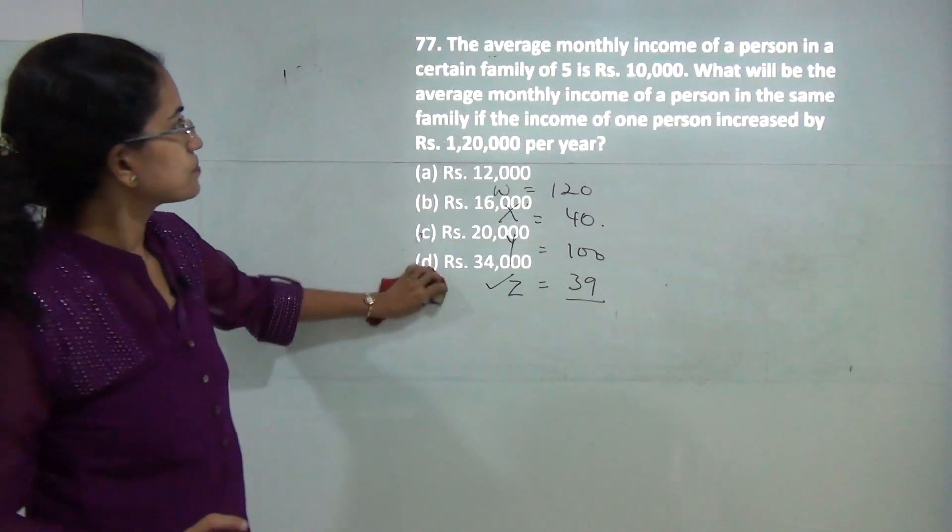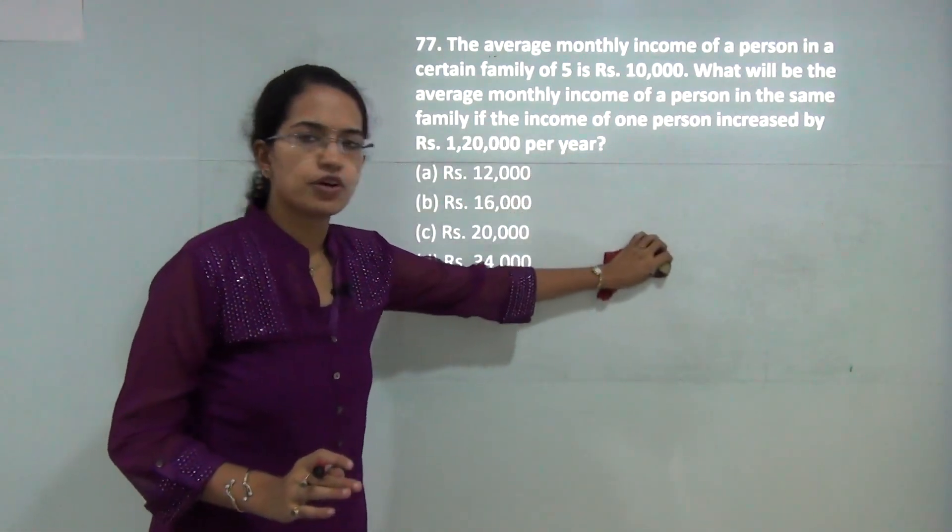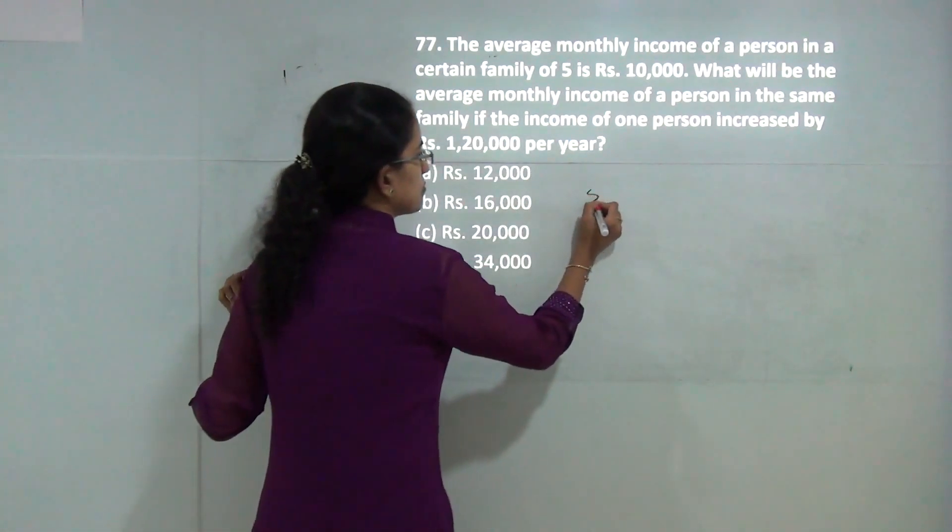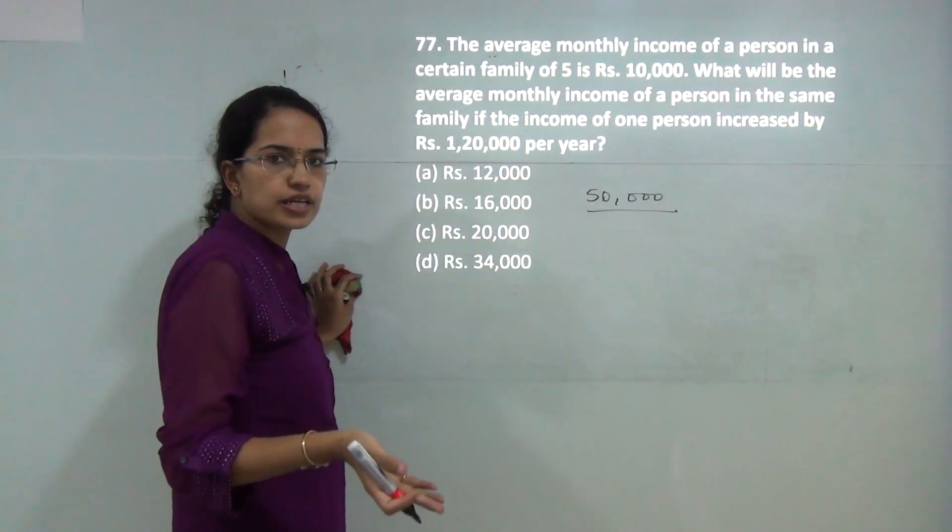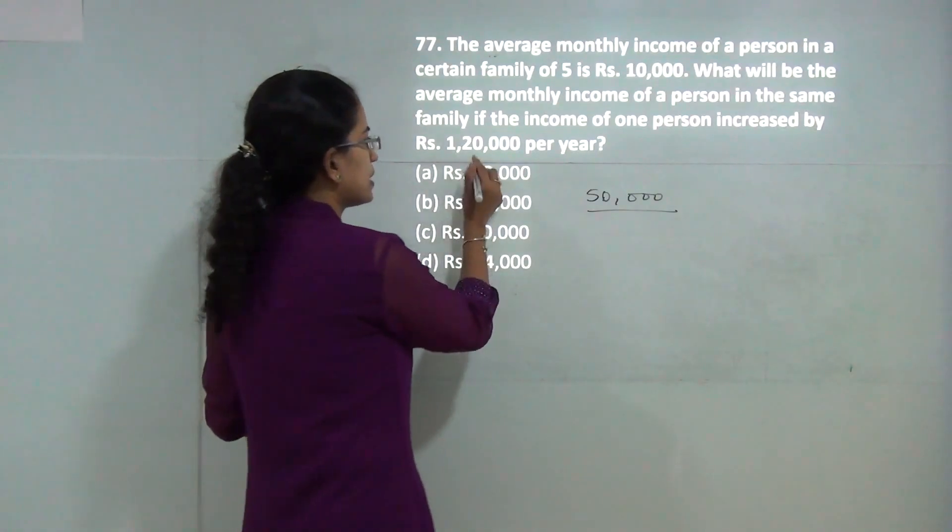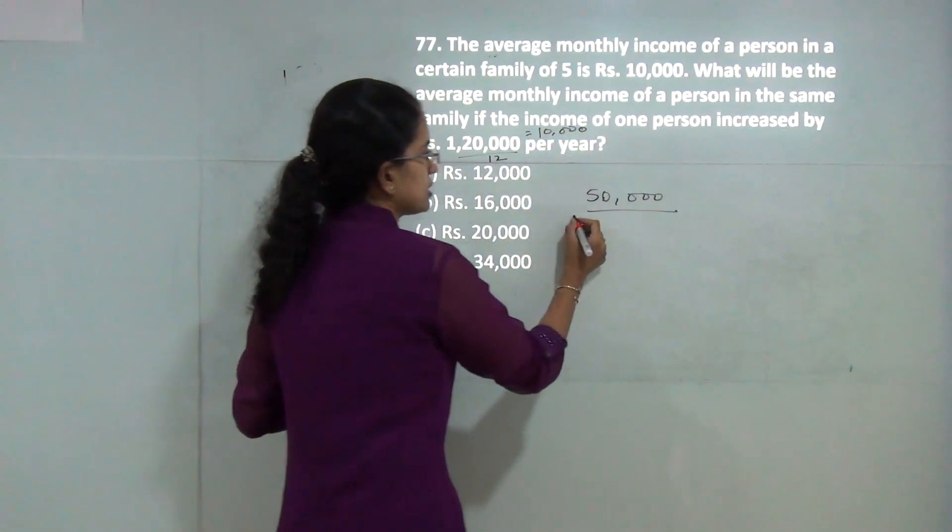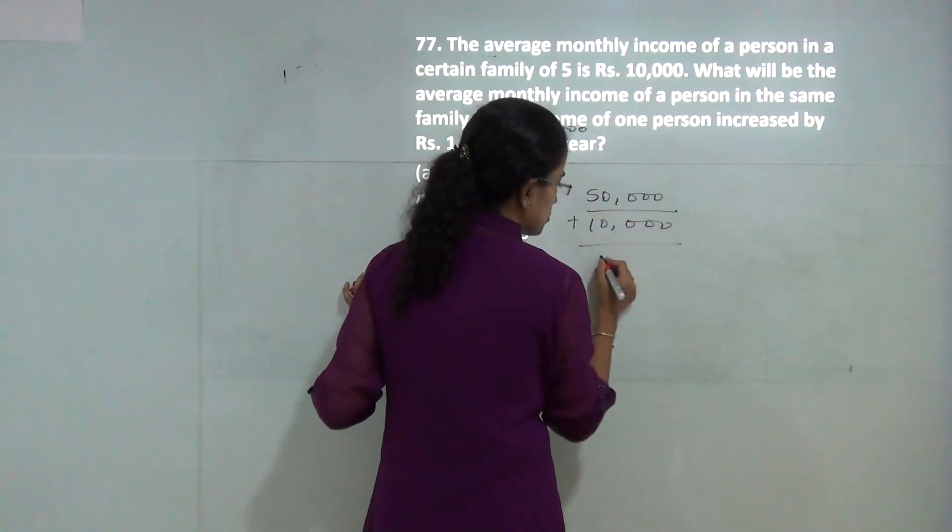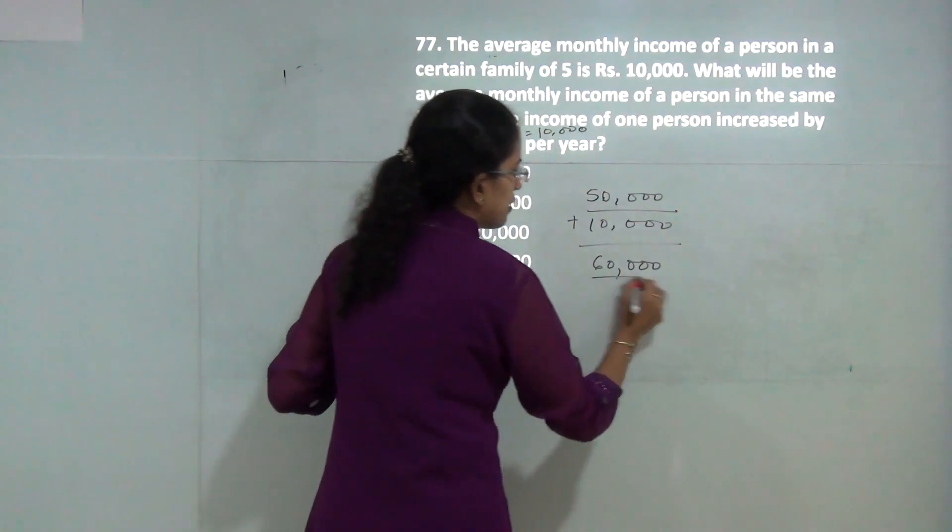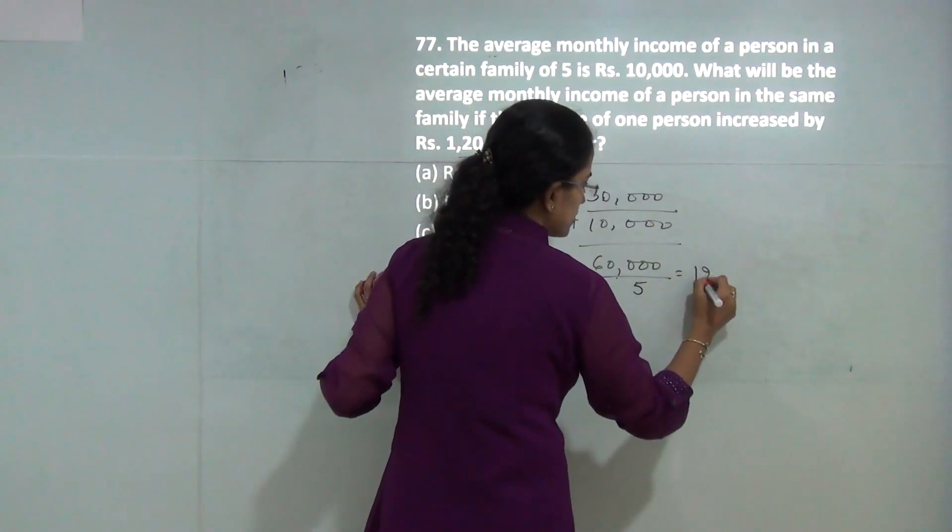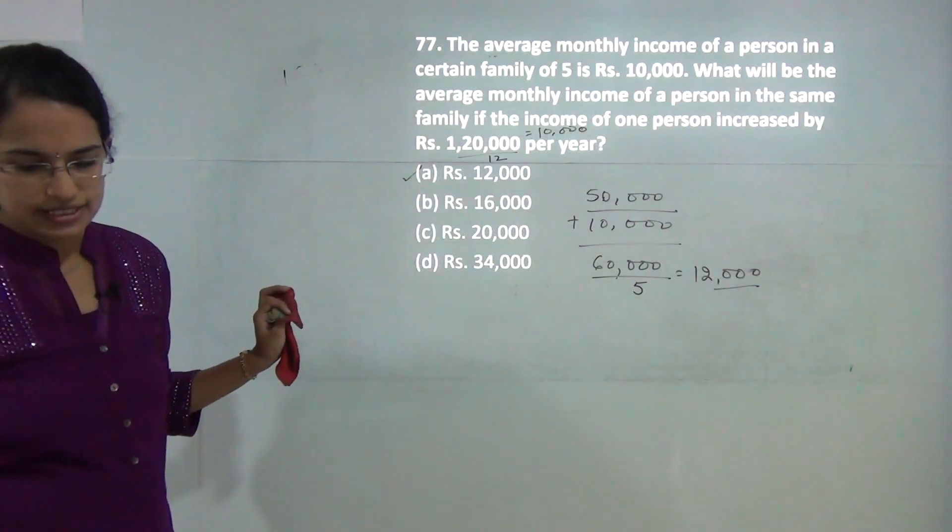The average family income is 10,000 for 5 people, so total family income is 50,000. One person gets an additional 120,000 per year, which is 10,000 per month. The new total is 60,000, so the average becomes 60,000 divided by 5, which equals 12,000. 12,000 is the correct answer.